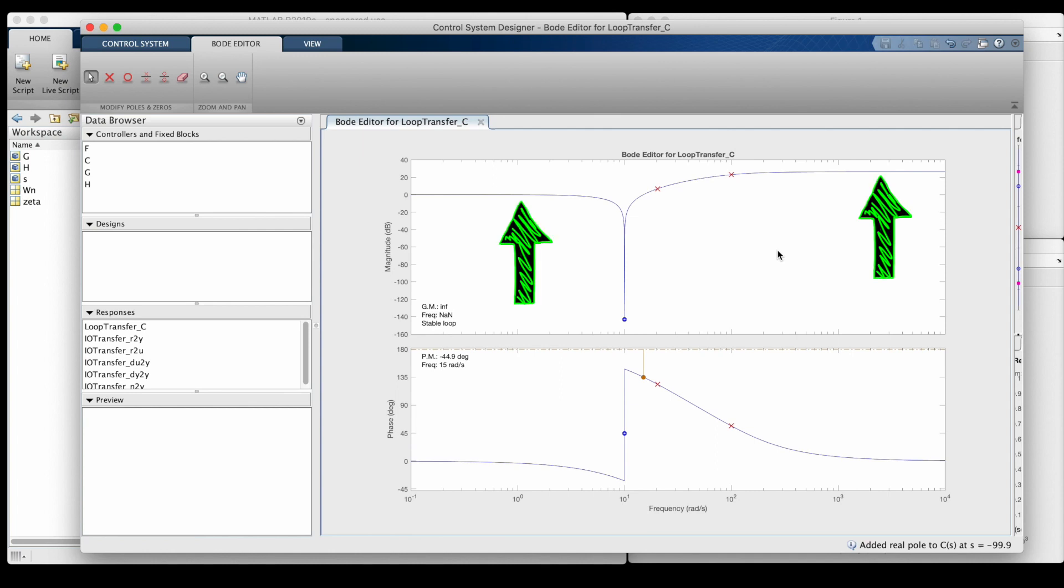However, it's not at zero decibels, which is what we need so that the high frequency signals are just passed through, and the amplitude is not modified in any way. So here's how we can fix this.